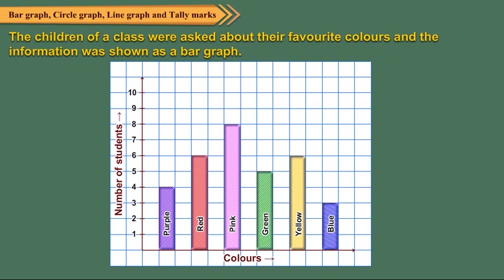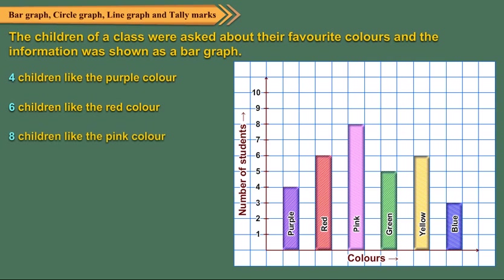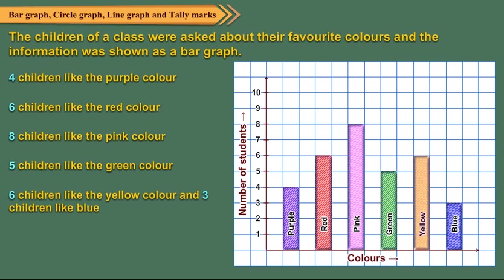From the bar graph we see that 4 children like the purple color, 6 children like the red color, 8 children like the pink color, 5 children like the green color, and 6 children like the yellow color, and 3 children like blue. It means there are 32 students in the class.